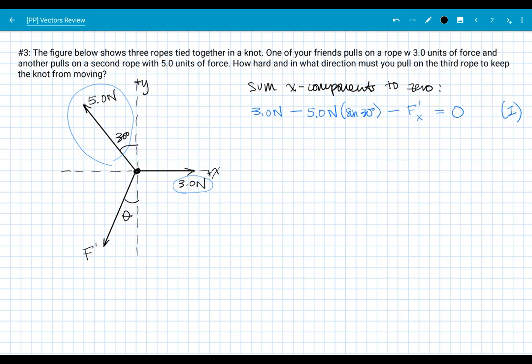And we are going to then sum the y components to zero. So my y components, I always start with the positive just because the hanging negative sign in front of the first term is a really likely place to drop it. So I try not to put one there. I'll start with a positive term. The five newton vector has an upward pointing y component, so I'll start with that. That will be five newtons times cosine 30 degrees, positive. And that's just then going to be minus the y component of F prime. The three newton vector has no contributions at all in the y. So this equation here only has these two forces in it, and I'm going to call that equation two.